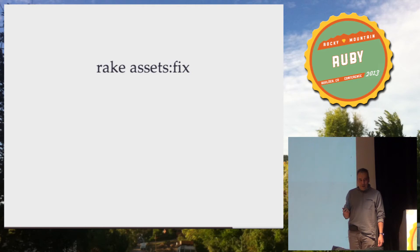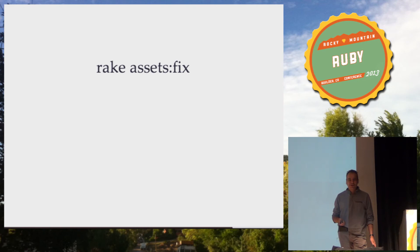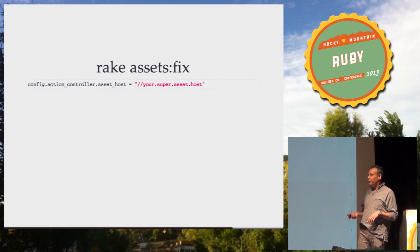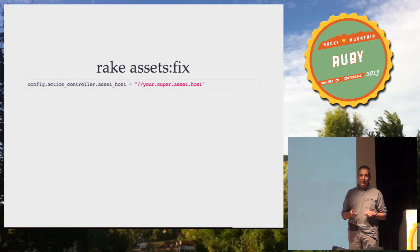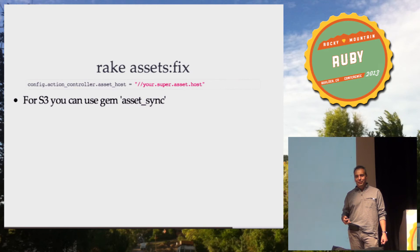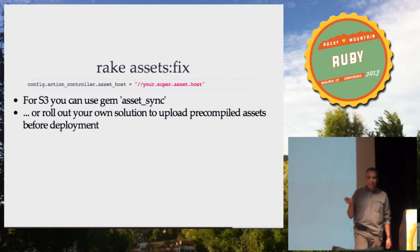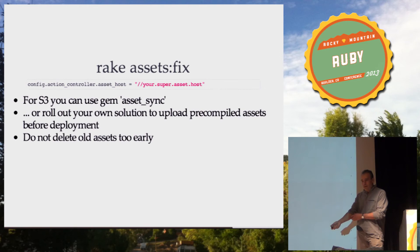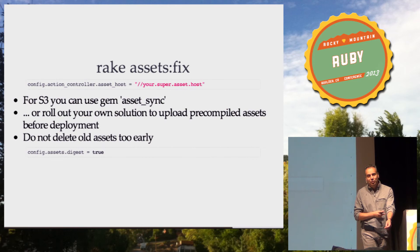How to fix this? Rails has all the bits and pieces to fix this — we just need to assemble them. The main part is to stop serving your assets locally. Push them to an asset host and use the asset_host configuration. If you're using S3 as your asset host, you can use the gem asset_sync, which plugs into your asset pipeline and uploads to S3 after compiling. It's not rocket science to roll your own solution to upload assets before deployment. Important: do this before you even try to start your deployment. Don't repeat the mistake the asset pipeline makes — don't clean up old stuff too early. Make sure new ones are stored in different files.